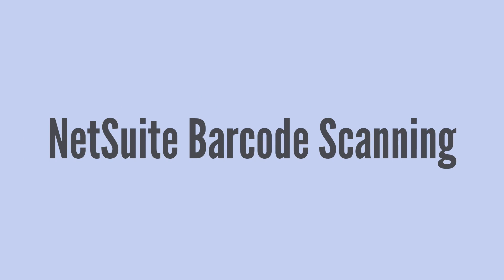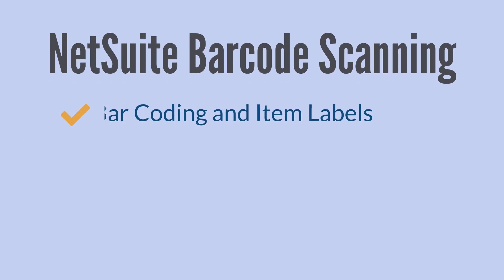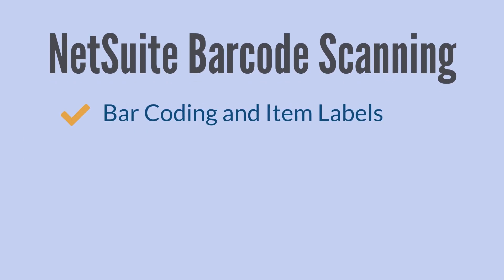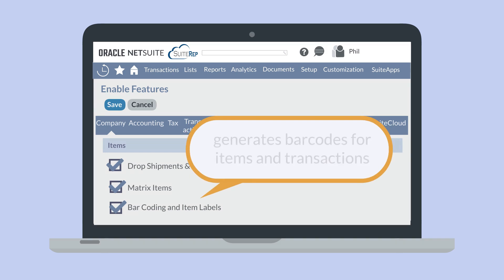Before you can use barcode scanning in NetSuite you need to first enable the barcoding and item labels feature. You can find this feature in the items section of the items and inventory tab in enable features. With the barcoding and item labels feature enabled, NetSuite will automatically generate barcodes for your items and transactions.